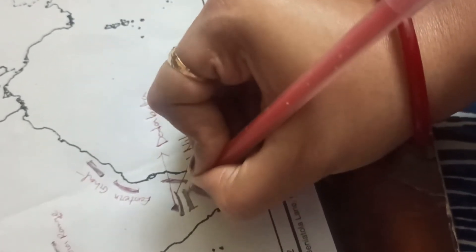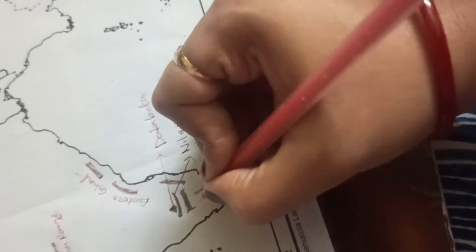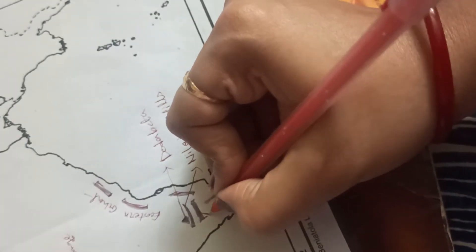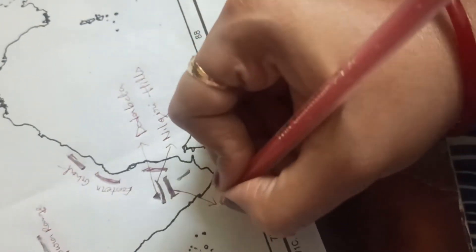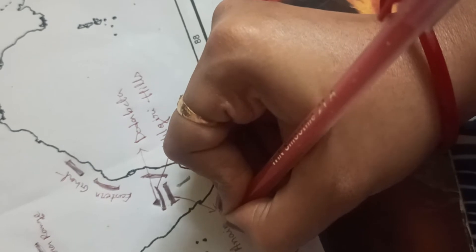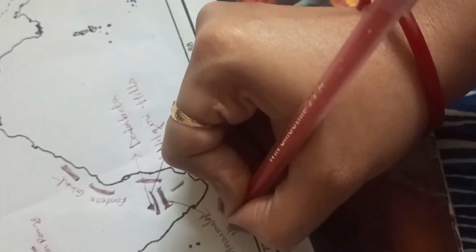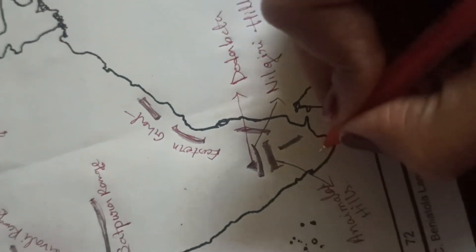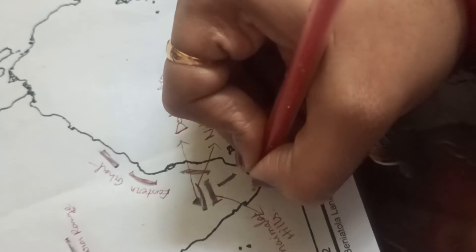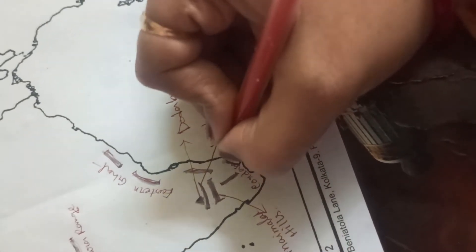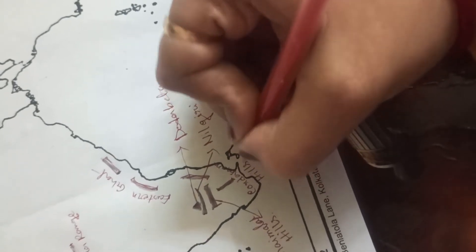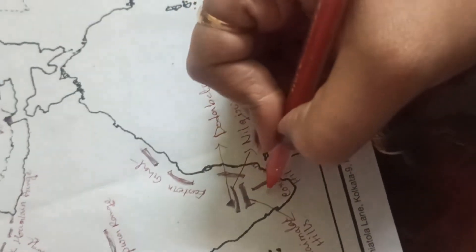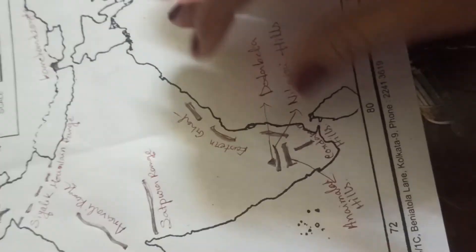Nilgiri Hills. And this one. This one. This one is Cardamom Hills. Cardamom Hills. Okay. This portion is actually located between this Western Ghat and Eastern Ghat joining. Okay. This range is located. Understood.